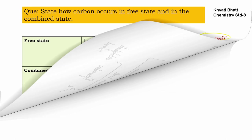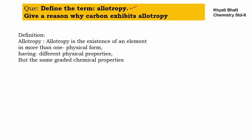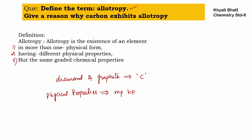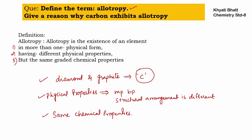Our question is to define allotropy and give reasons why carbon exhibits allotropy. Allotropy is the existence of an element in more than one physical form. For example, diamond and graphite are physically different but have the same constituent element, carbon. Second, they have different physical properties — their melting points, boiling points, and structural arrangements differ. Third, they have the same general chemical properties because their constituent element is carbon.